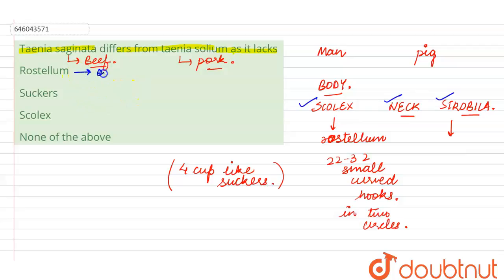So, here we see that option number one is the right answer for this question, because rostellum, which lies at the anterior end of the scolex, is absent in case of the beef tapeworm. So, let's mark option number one as the right answer for this question, rostellum is absent.